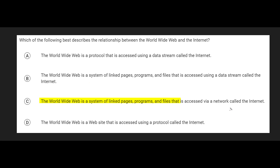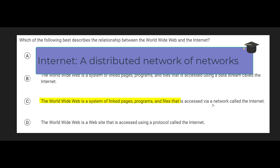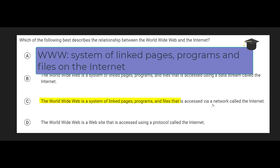This question is a little tricky because it calls the Internet a network. That's true, but it's an understatement. The Internet is not really just one network — it's a combination of networks, which can itself be considered a network. It's a network of networks. So the Internet is a network composed of many smaller networks, and the World Wide Web uses the Internet to show linked pages, programs, and files. Those are the definitions you should remember.